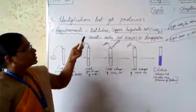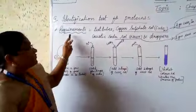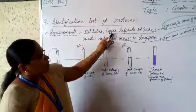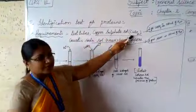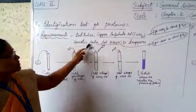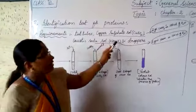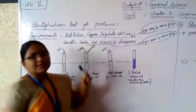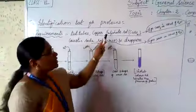For this test we need some requirements. They are test tubes, copper sulphate solution (CuSO4 formula), caustic soda solution which is sodium hydroxide solution, and droppers. Here copper sulphate is solid but we need solution.